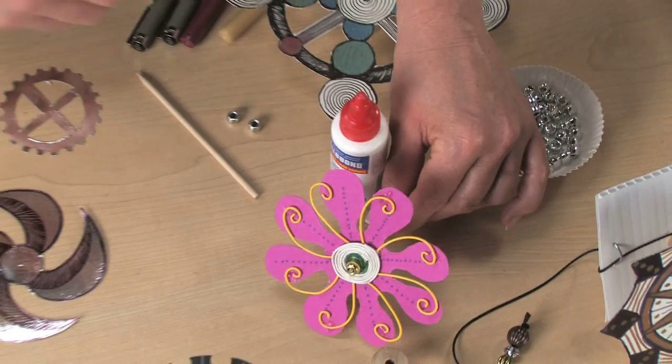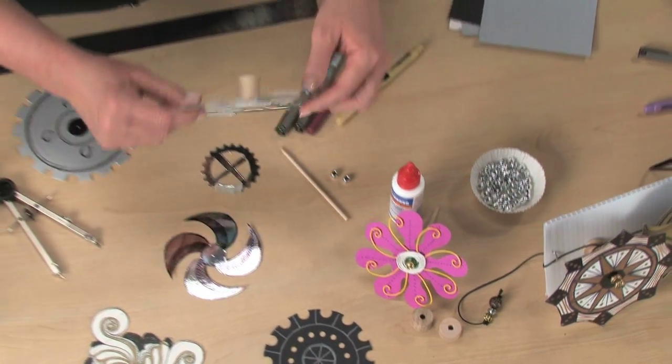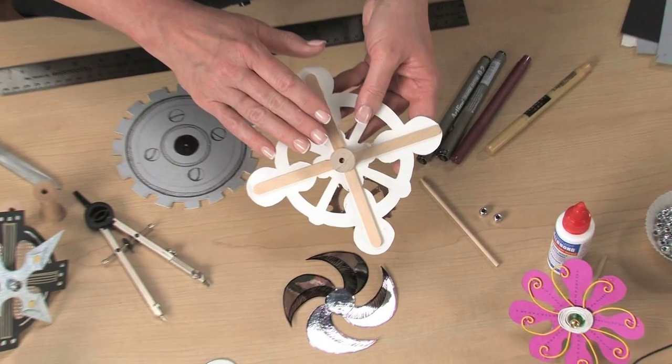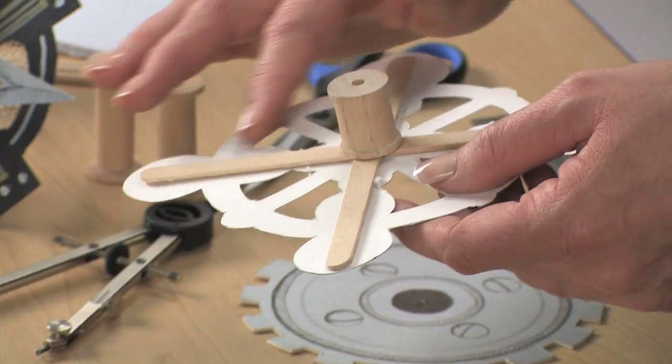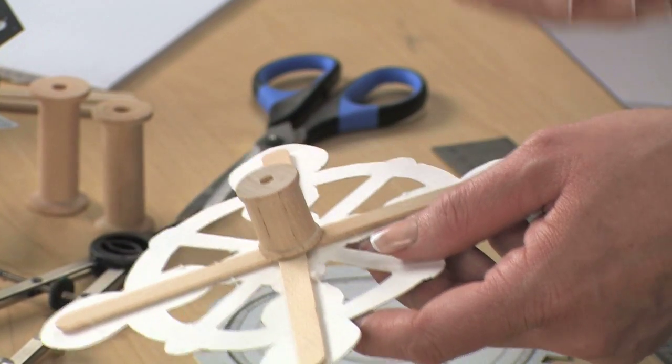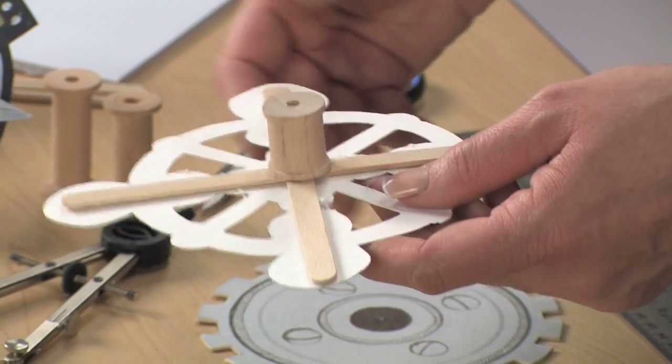If I turn this one over, you'll see I've glued a wooden spool to the back side. I've also chosen to glue a couple craft sticks to the back, just to give it some extra support so it doesn't warp or bend.